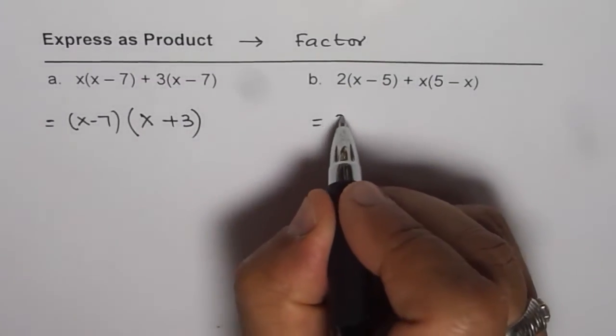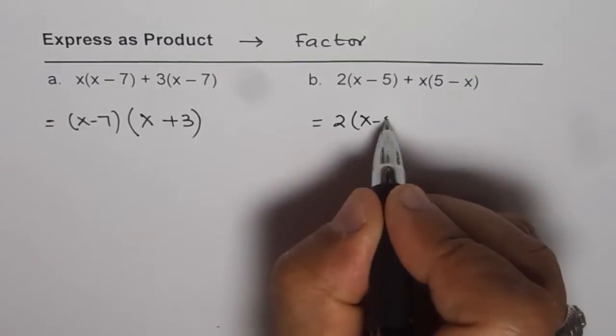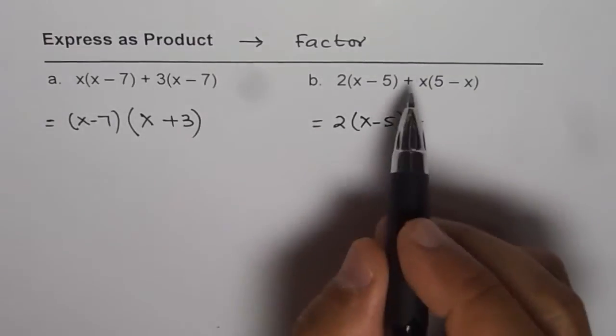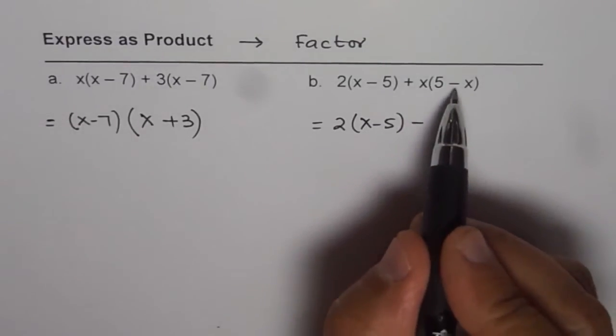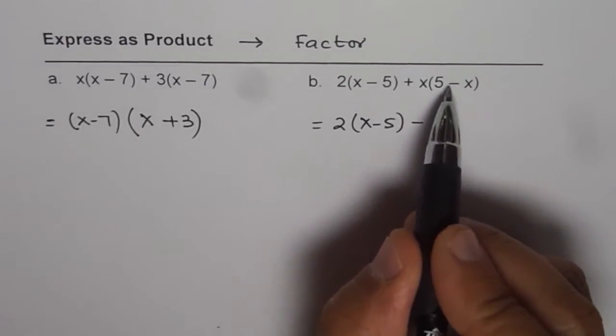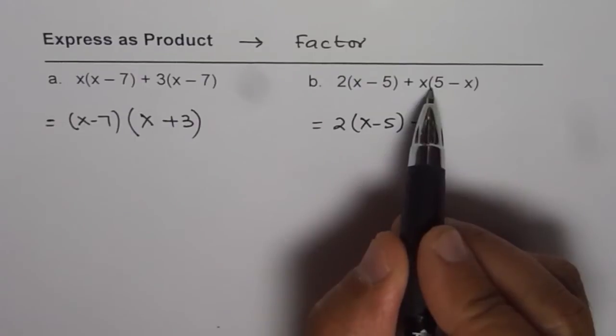Let me write this expression as 2 times x minus 5. Instead of plus, let me factor out minus 1. That means what I am doing here is I am factoring out minus 1 from the second term.